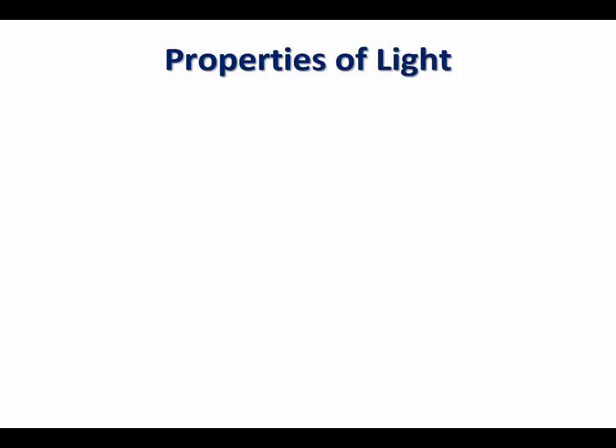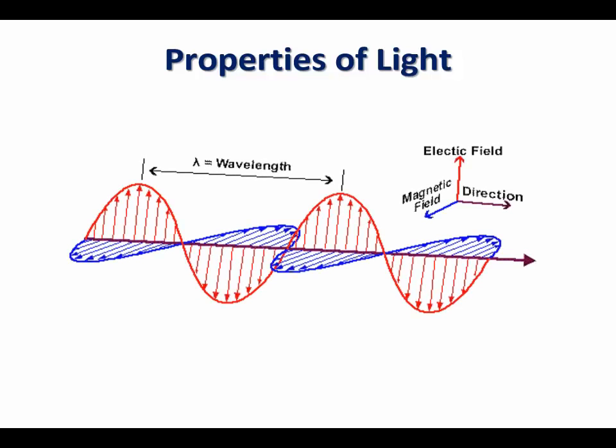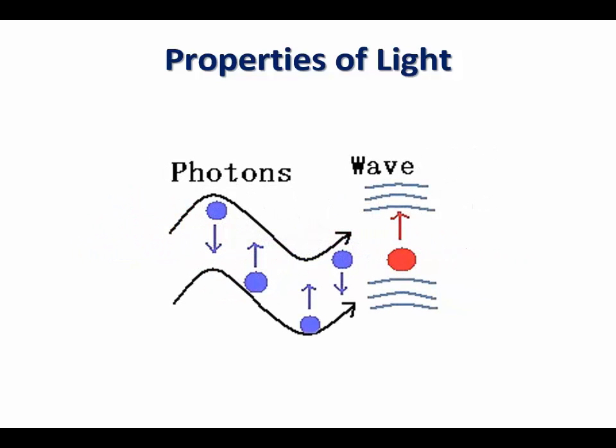Since photosynthesis is dependent on light energy, let's take a look at the properties of light. Light is a form of electromagnetic radiation. It acts like a particle as well as like a wave. Light particles are known as photons, and each photon has a specific amount of energy. Since light particles behave like a wave, each photon travels in a wave fashion that has a characteristic wavelength.